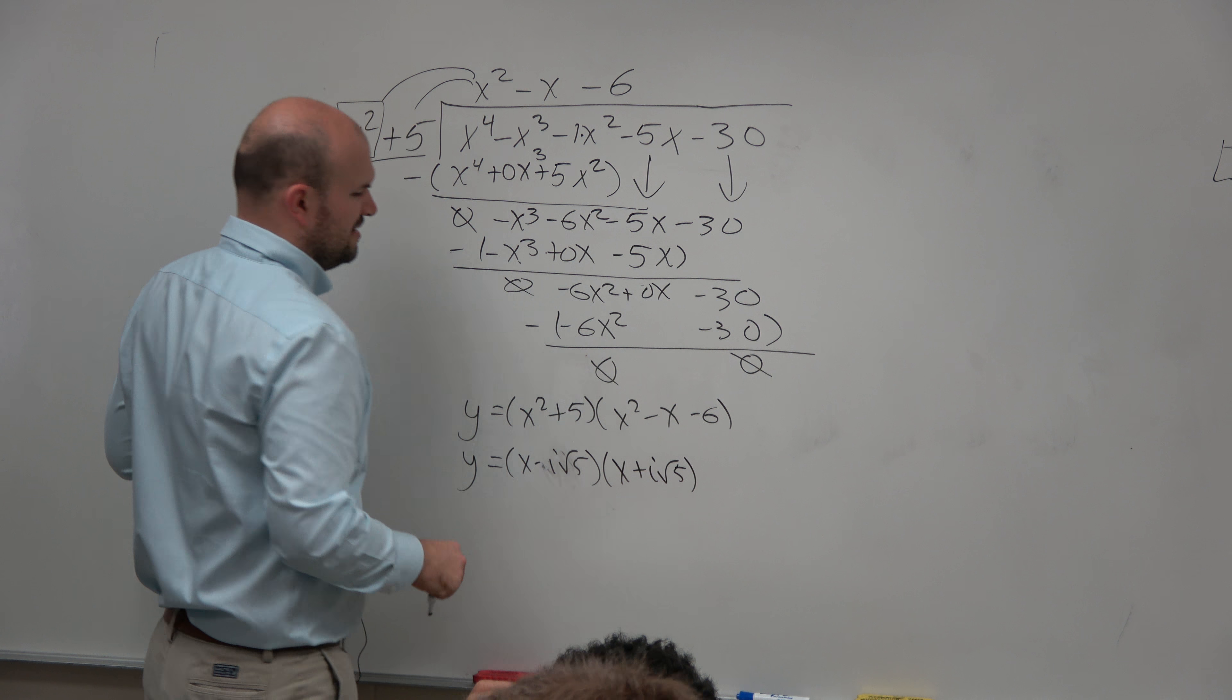Then here, I just need to factor this down. So let's make sure it's factorable. Because if it's not factorable, I have to go and use the quadratic formula or completing the square. So what two numbers multiply to give you negative 6 and to give you a positive 1? Negative 3. There you go. And then can we find all the zeros from here? Zeros are going to be plus or minus i square root of 5, 3, and negative 2.